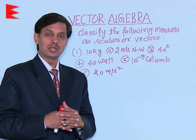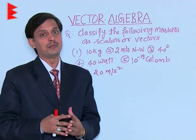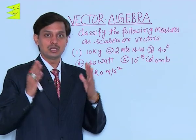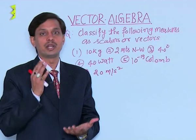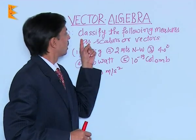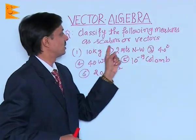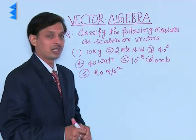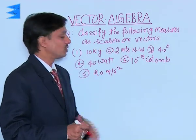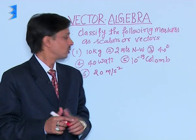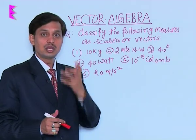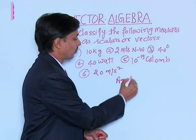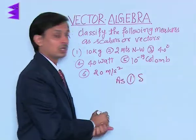Now I am discussing a question where we will classify which quantity is scalar and which is vector, on the basis of magnitude and direction. Classify the following measures as scalars and vectors. Ten kilograms — it is direction-less, so the first one is a scalar.